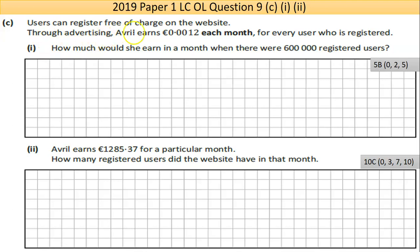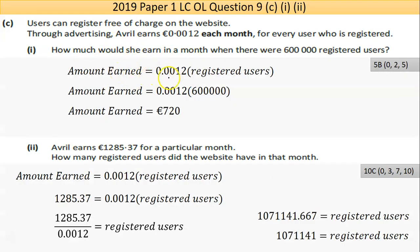Part C says users can register free of charge, and through advertising Avril earns 0.012 euros each month for every user who is registered. How much would she earn in a month when there were 600,000 registered users? The amount earned is simply the number of users multiplied by 0.012, so it's pretty straightforward - multiply 600,000 by 0.012. Using the calculator, she makes 720 euros in that month.